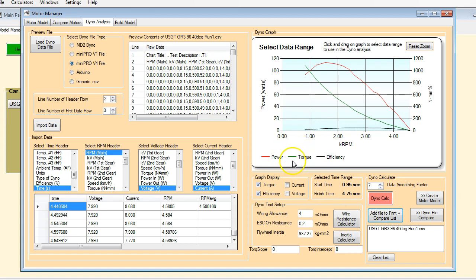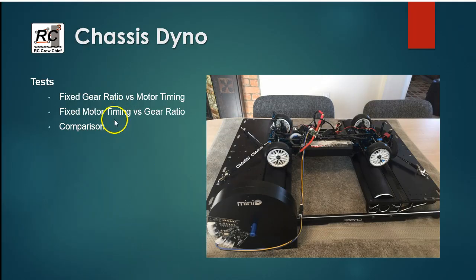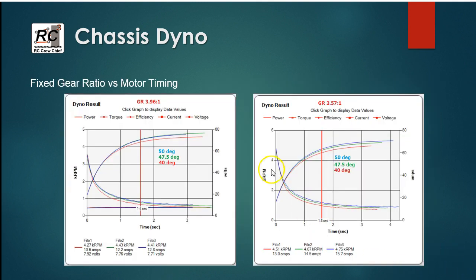So that's how easy it is to import files into it. The nice thing you can do with RC Crew Chief is you can load different files in and do comparisons head-to-head. So I'm not going to bore you with all that. I'm going to switch back because I've already done all the information prepared and you can look at it. So what we're going to look at here is we're going to take fixed timing—or sorry, fixed gear ratio—and vary the motor timing and see what effect that has.